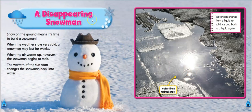A disappearing snowman! Snow on the ground means it's time to build a snowman. When the weather stays very cold, a snowman may last for weeks. When the air warms up, however, the snowman begins to melt. The warmth of the sun soon changes the snowman back into water. Water can change from liquid to solid ice and back to a liquid again.